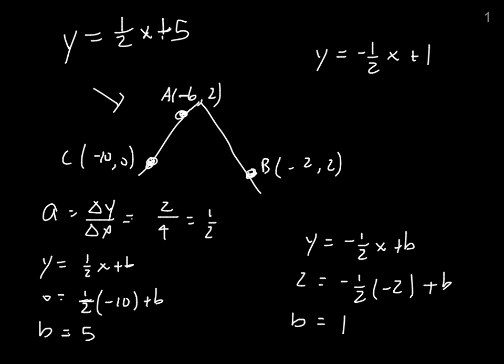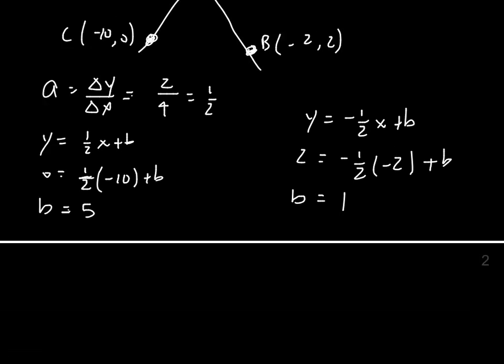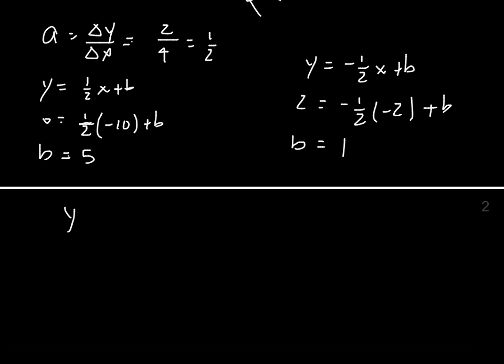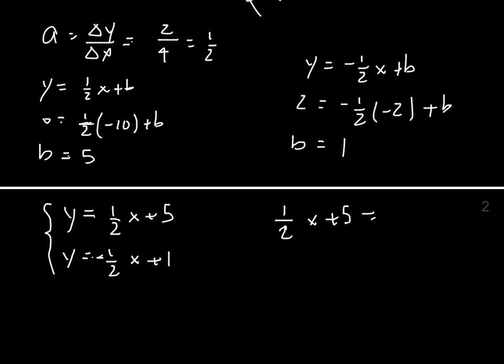Now that I have the two equations, I make them intersect to find the point of intersection, which gives me h and k. Intersecting the two equations using the comparison method, I have 1 half x plus 5 equals negative 1 half x plus 1. Bringing the x's to one side, I get 1 half plus 1 half x equals 1 minus 5, which is negative 4.